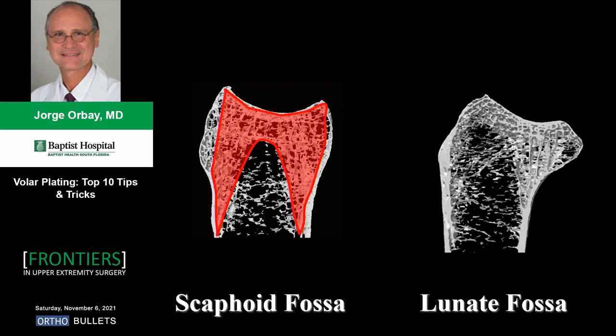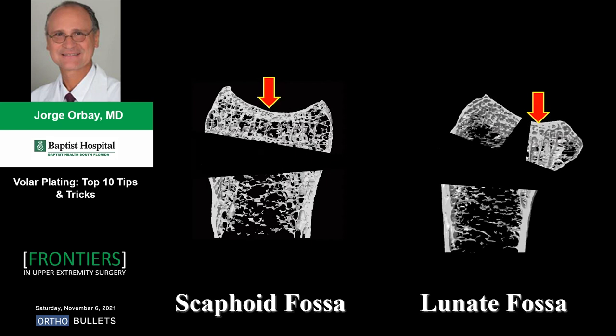Why are these fractures difficult to treat? The scaphoid fossa subchondral plate is supported by two strong columns of metaphyseal bone, while the lunate fossa is supported by only one. This is because on the scaphoid fossa the centroid of force application is in the center, while on the lunate fossa it is all the way palmarly — so there is no dorsal column. When a fracture occurs, the lunate fossa is offset with little support, making it a very unstable situation.